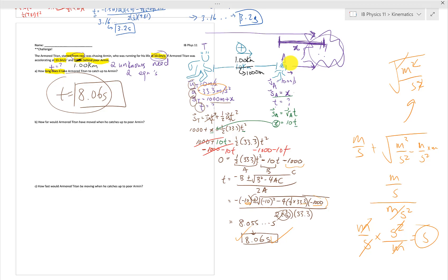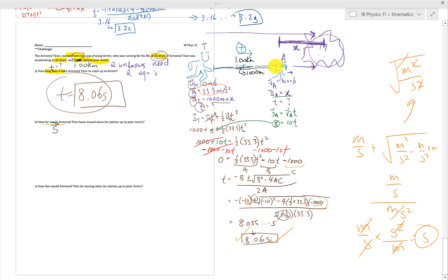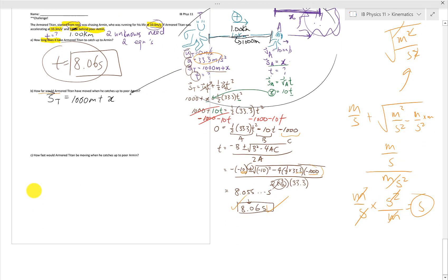And so the next question is, how far would the Armored Titan have moved when he catches up to poor Armin? So this is asking for his displacement. And that's including the 1,000 meters he's traveled in the beginning. So what we need to do is, the Armored Titan here, we know this is his 1,000 meters plus X, based off of this over here. I'm going to use this for all of these questions, so I'm not going to redraw everything again. So we know the, we don't have the X, so that's a problem. But we do know that his displacement can be found using this other equation that we've set up that uses time instead of the X over here.